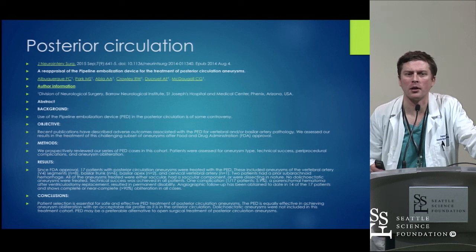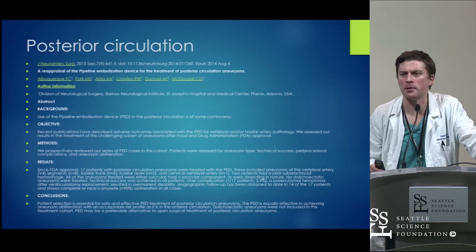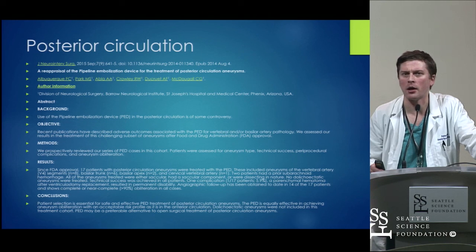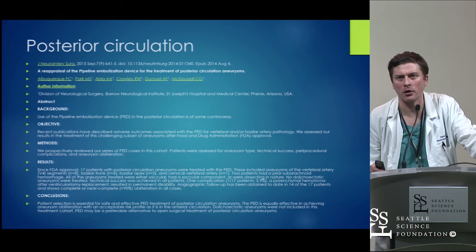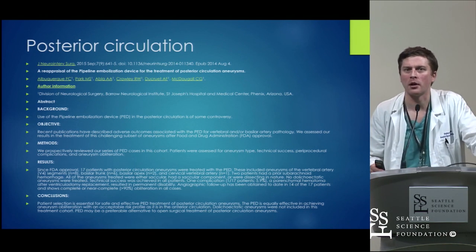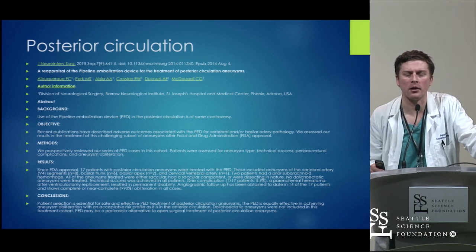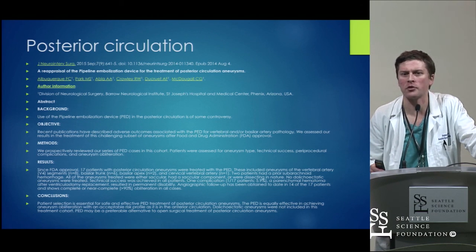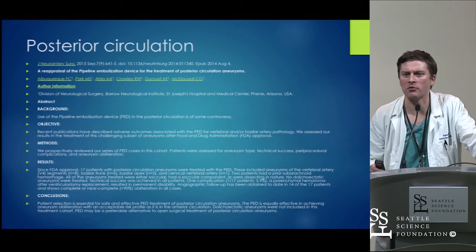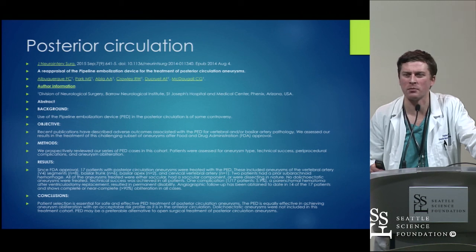For the posterior circulation, initially a paper from the Buffalo group showed some challenging results with posterior circulation Pipeline. Since then we've been more selective about which posterior circulation cases we treat. Dr. McDougall's paper noted they didn't treat dolichoectatic aneurysms with this technique — I think those are aneurysms we still haven't quite figured out. Flow reversal is probably the key treatment aspect. Pipeline for fusiform giant basilar aneurysms doesn't seem to work so well.